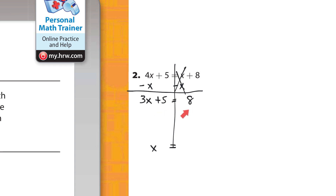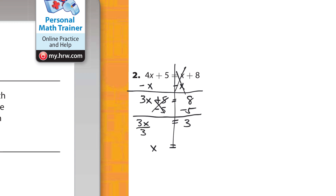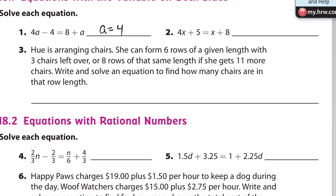We have 3x equals 8. Now push the constants to the left-hand side using inverse operations — subtract 5 from both sides. These cancel, so 3x equals 8 minus 5, which is 3. The inverse of multiplication is division, so divide by 3 on both sides. These cancel, and 3 divided by 3 is 1, so x equals 1.